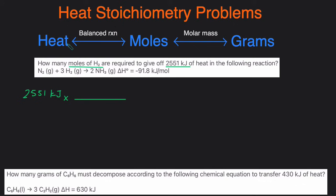This time we have heat and we want to get to moles, so it's a one-step conversion. We put kilojoules on the bottom so it can cancel out, and moles of H2 on the top. Looking at the chemical reaction, we have 3 moles of H2 on top and 91.8 kilojoules on the bottom. Note that I'm dropping the negative — in the end you can't have a negative amount of moles, so you want to make sure grams and moles are always positive.